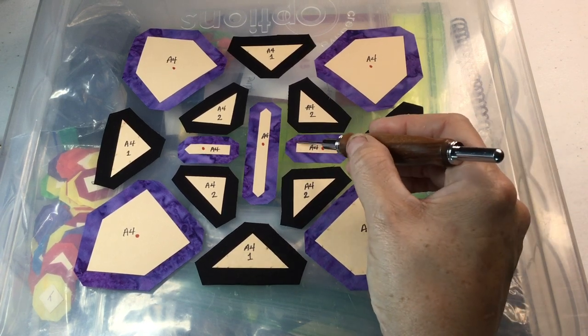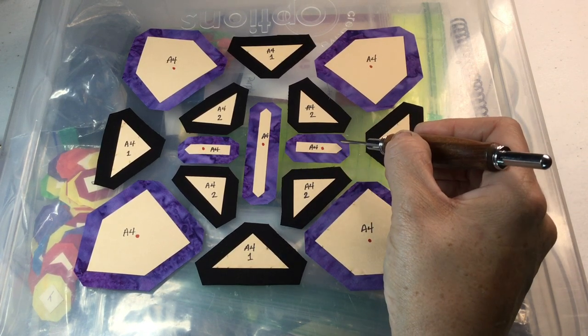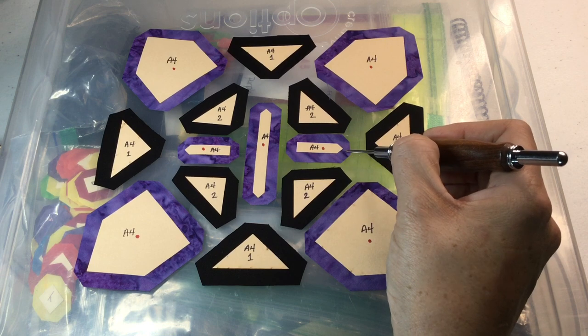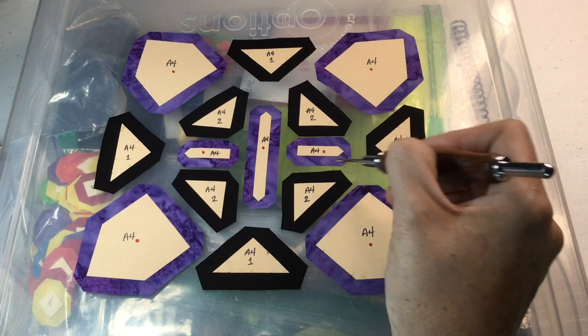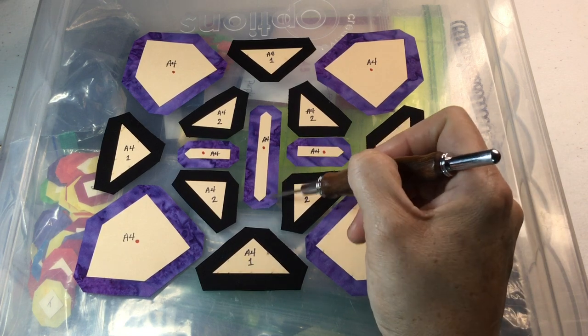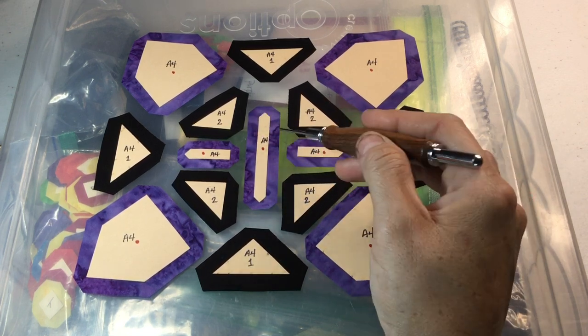For the arrow pieces, I'm going to do the short sides first, so I'm going to do the point so that it's got the sharpest edge. Then this other short side, then the long sides. Same thing with here, I'll do each point and then the long sides.